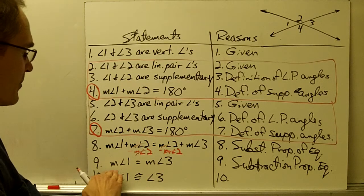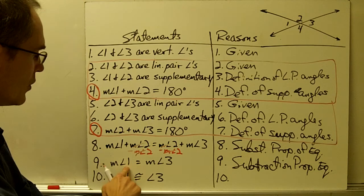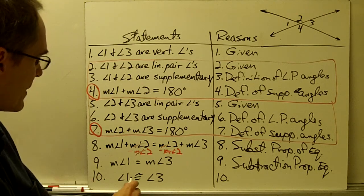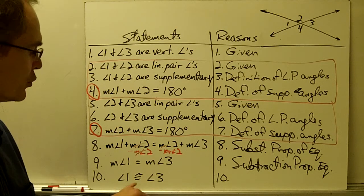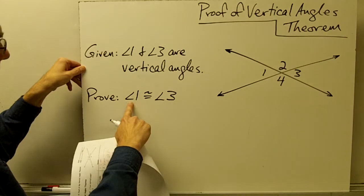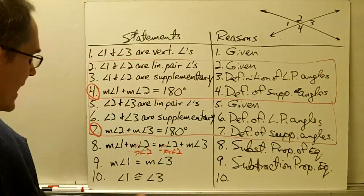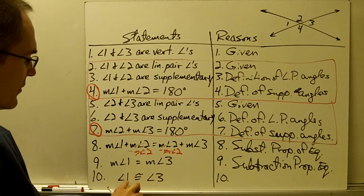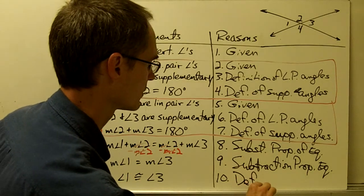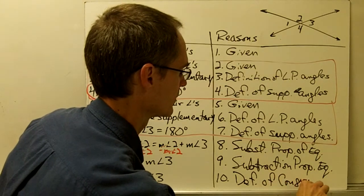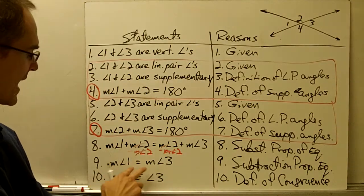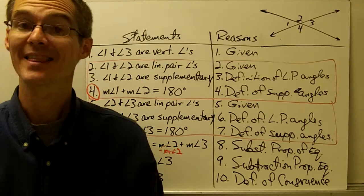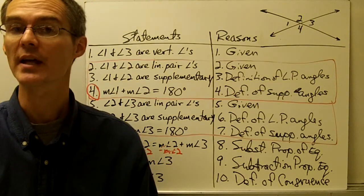Now I'm practically done. A lot of people might stop at statement 9, since showing that the measure of angle 1 equals the measure of angle 3 essentially shows they are congruent. But I'll write one additional statement so it matches exactly the prove statement: angle 1 is congruent to angle 3. If two angles have exactly the same measure — meaning they are exactly the same size — then those two angles are congruent, because that is what congruence means for angles.